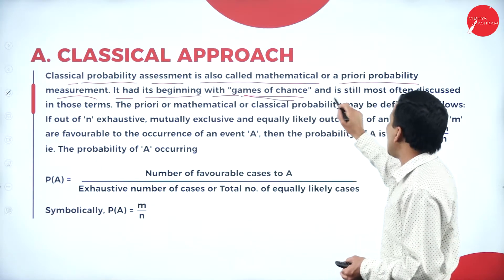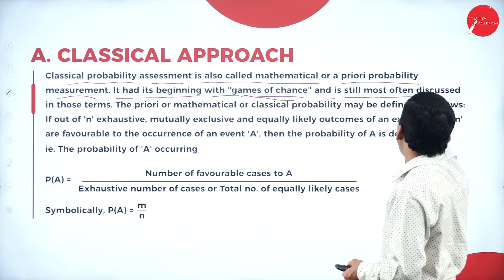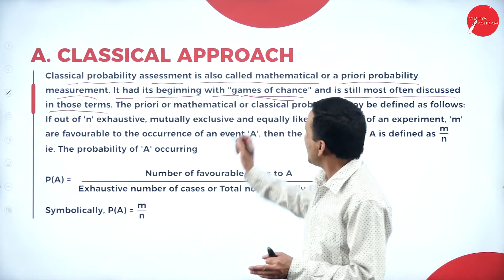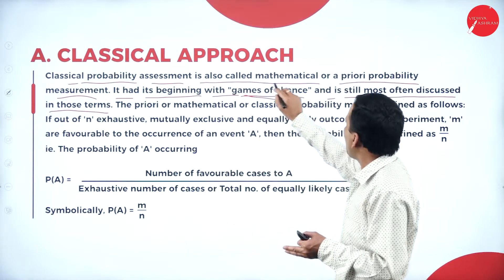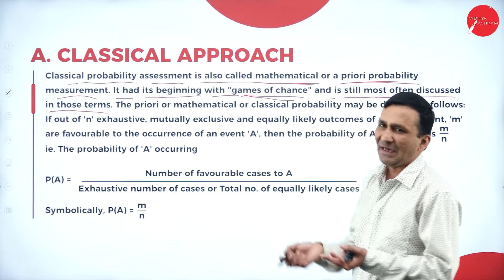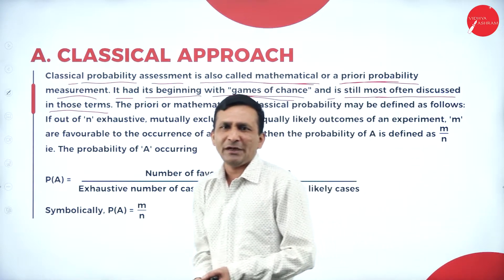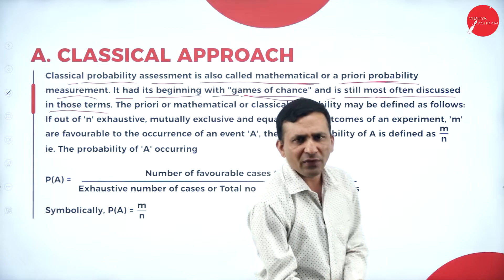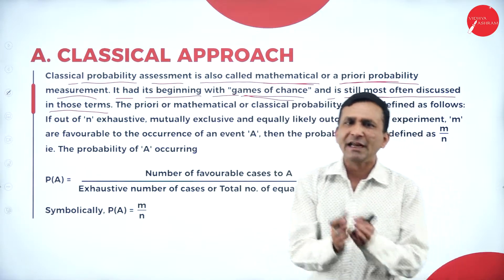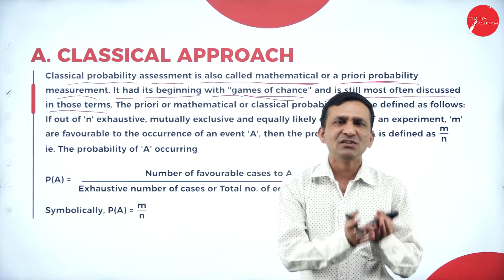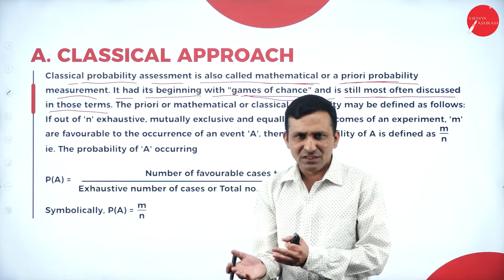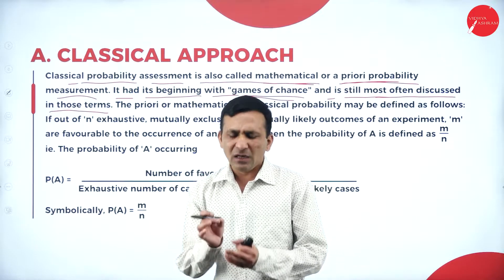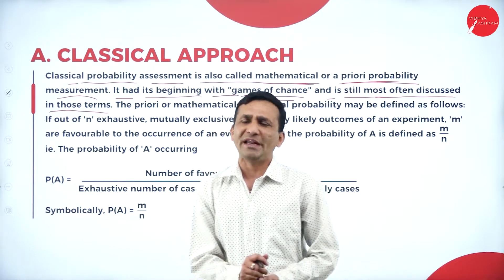The game of chance is still most discussed in these terms, because classical — or mathematical a priori — probability: when you are tossing a coin you get either head or tail; rolling a dice you get one to six numbers, any one number. So here the finite numbers means the numbers we are able to count.